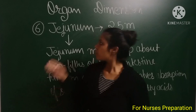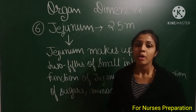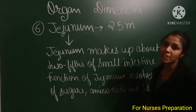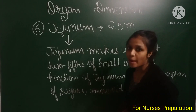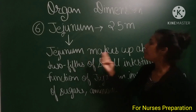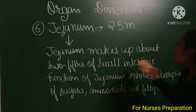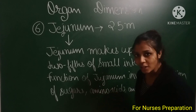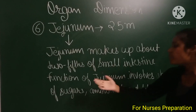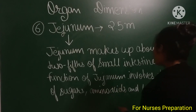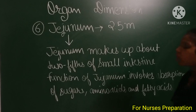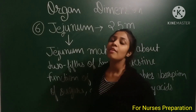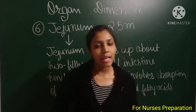Next organ is the jejunum. The jejunum is 2.5 meters in dimension and makes up about two-fifths of the small intestine. Its function involves absorption of sugars, amino acids, and fatty acids.